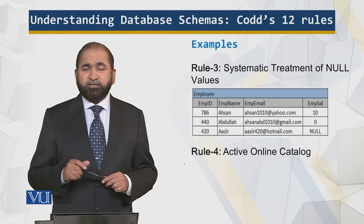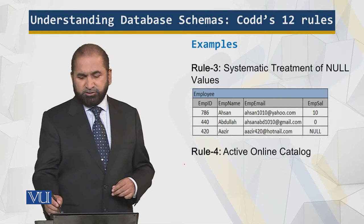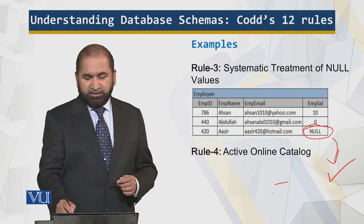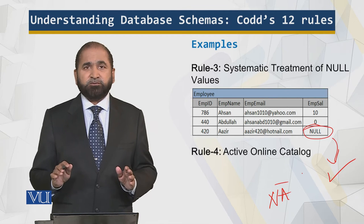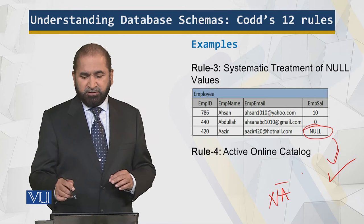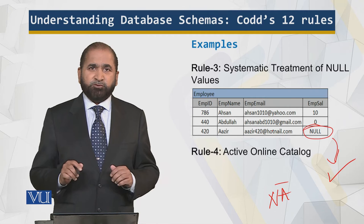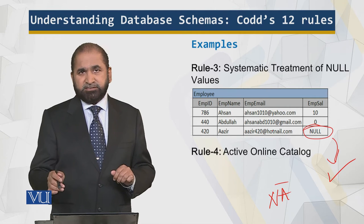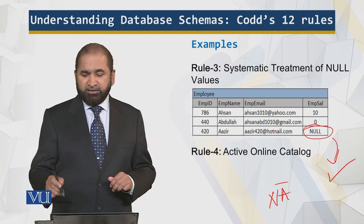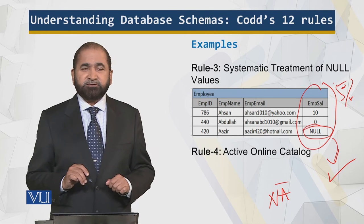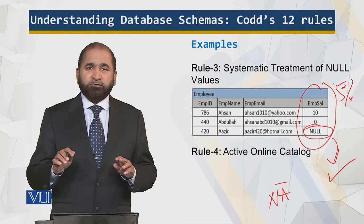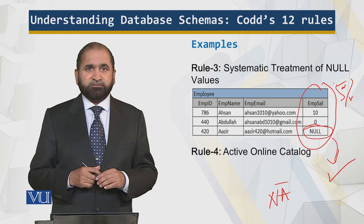Systematic treatment of null: in the table, an empty space representing null is fine, but 'NA', 'not applicable', 'missing value', or 'value not available' are not allowed — there has to be consistency. Null can be used when, for example, an email address is not available. Null plus zero is not zero, it is null. If everybody gets a 5% raise, the employee with null salary will have a null result, while other employees get the raise. That is the systematic treatment of null.